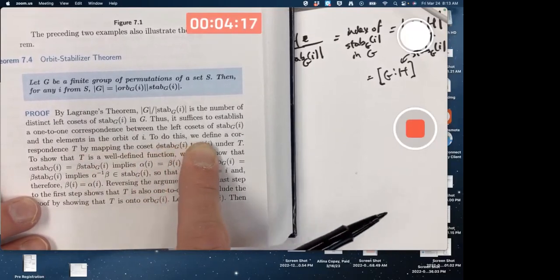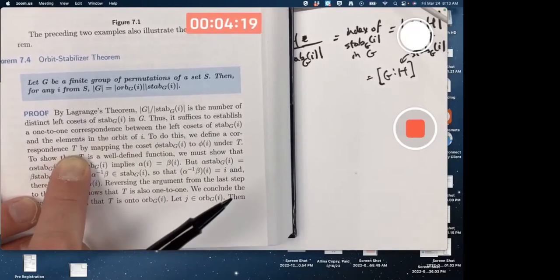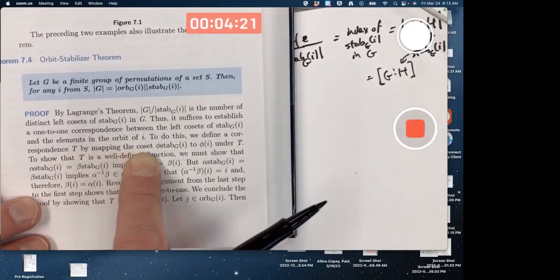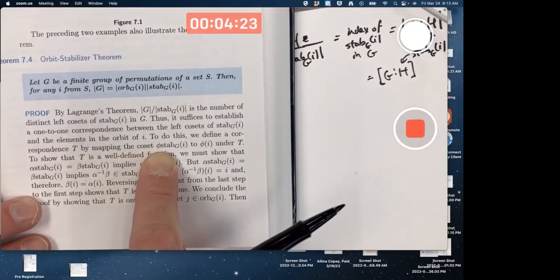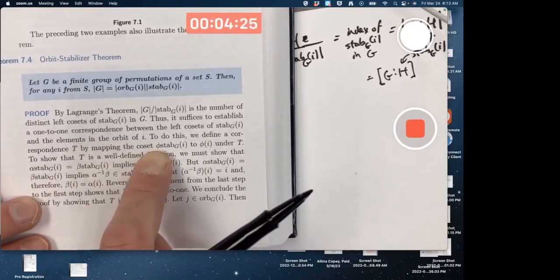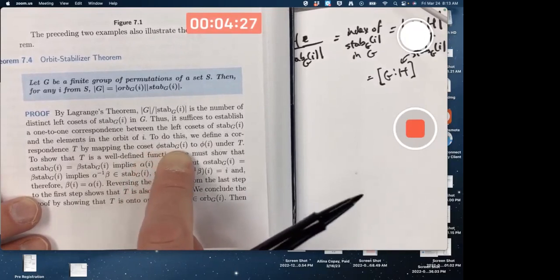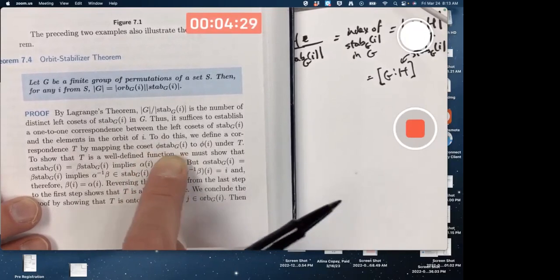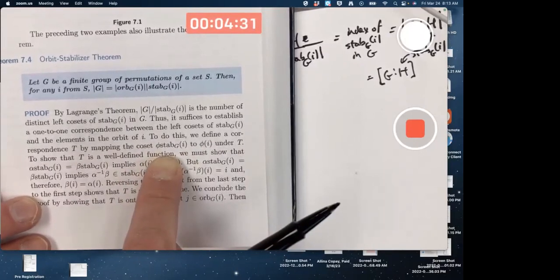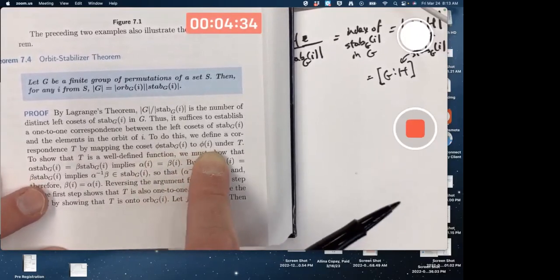To do this, define a correspondence, T, a function, really, by mapping an arbitrary coset. Phi is an element of the group. Stabilizer is a subgroup. It's like your H. This is a left coset. To phi of I under T.